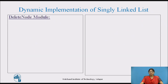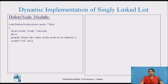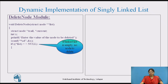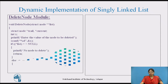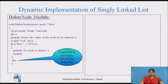Here we discuss the delete node module. We declare two pointers — trail and current — and a variable x. We collect the value of x from the user, representing the value of the node to be deleted. First we check if the list is equal to null — if the linked list is empty, there is no node to delete, and we print a message accordingly.